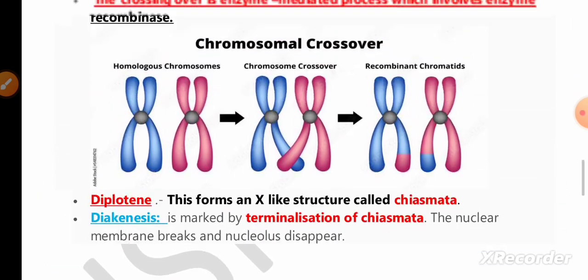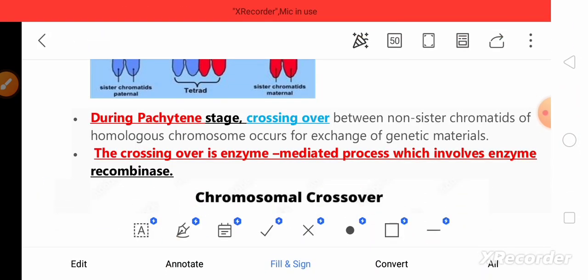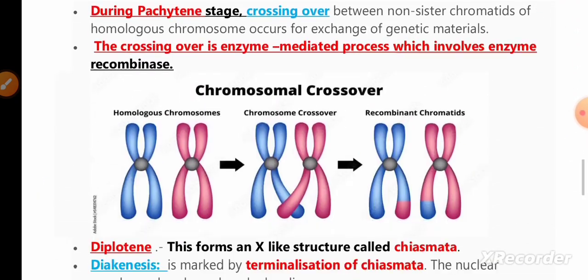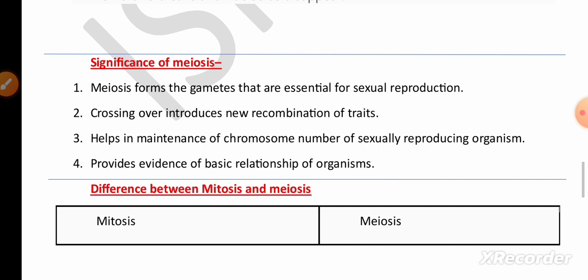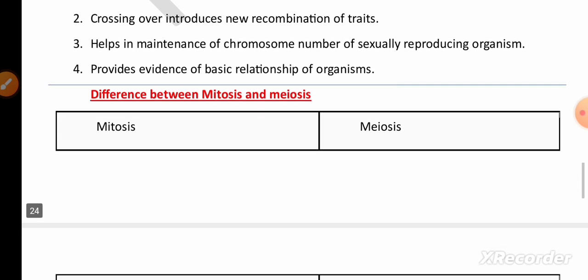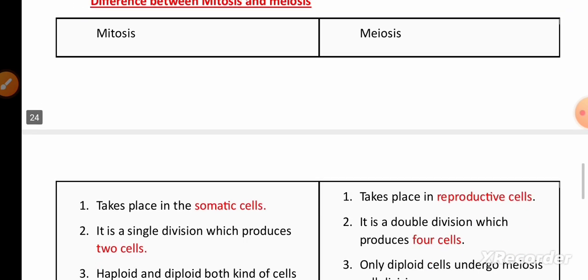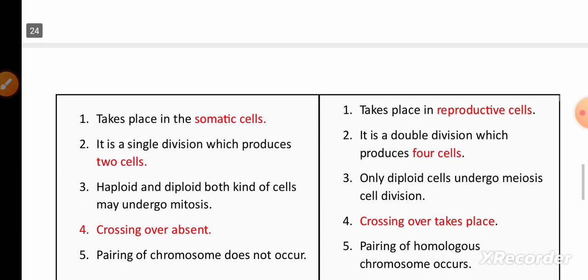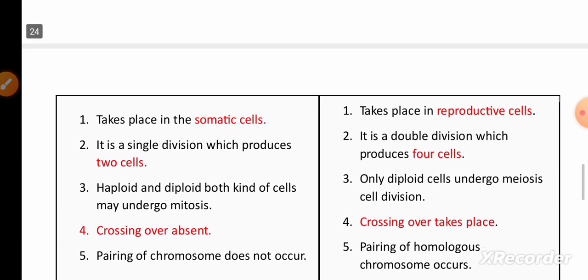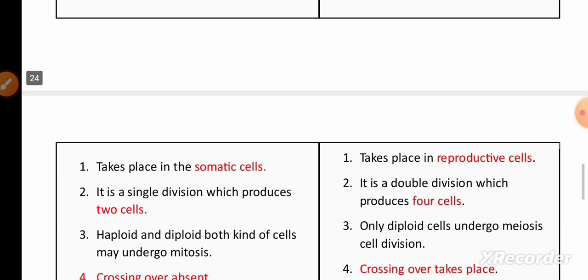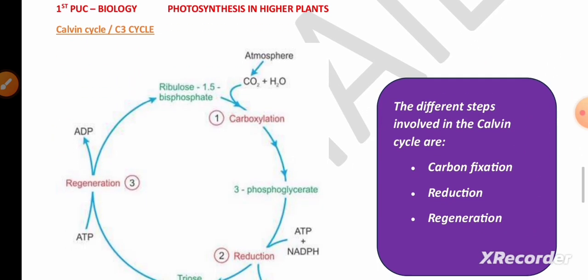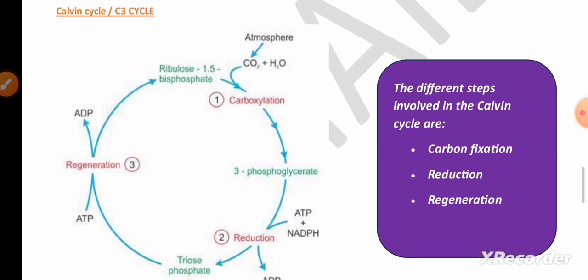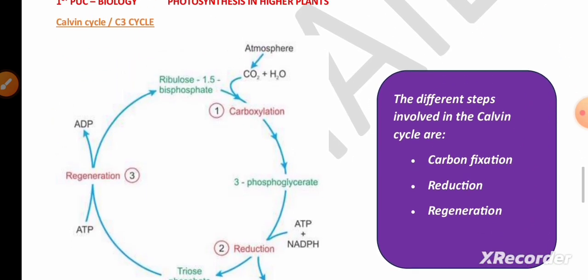Remember the characteristics of pachytene, diplotene, and diakinesis for one mark. Another important one-mark topic is the significance of meiosis. The difference between mitosis and meiosis is also very important and may sometimes be asked for five marks.